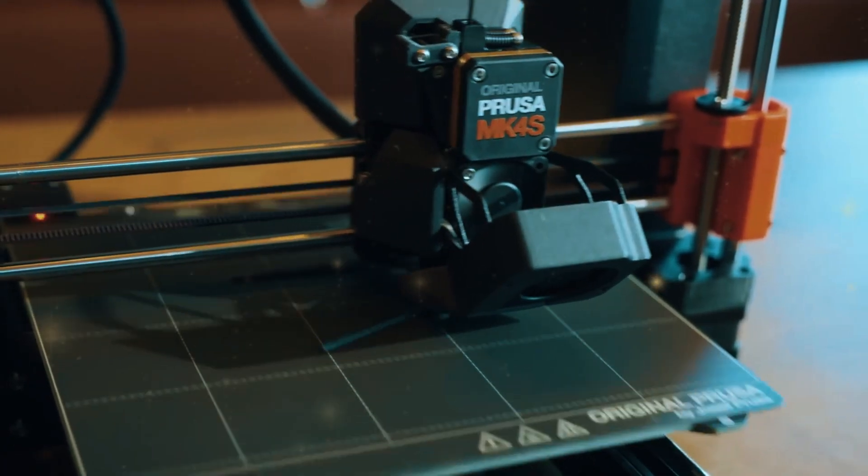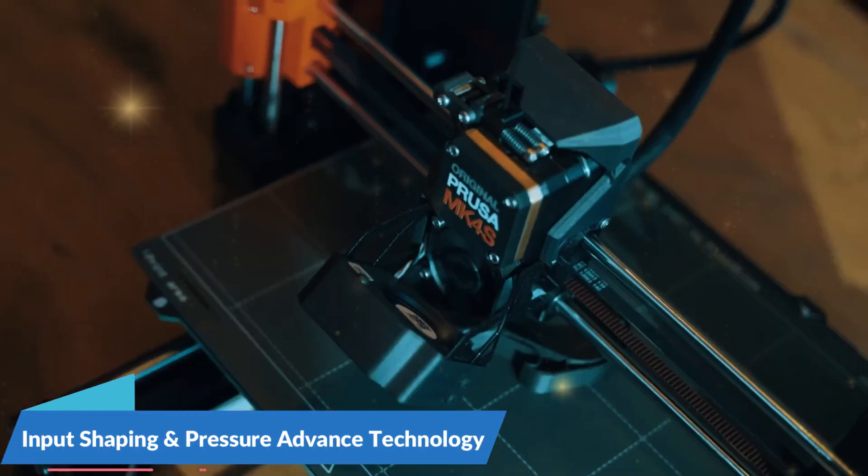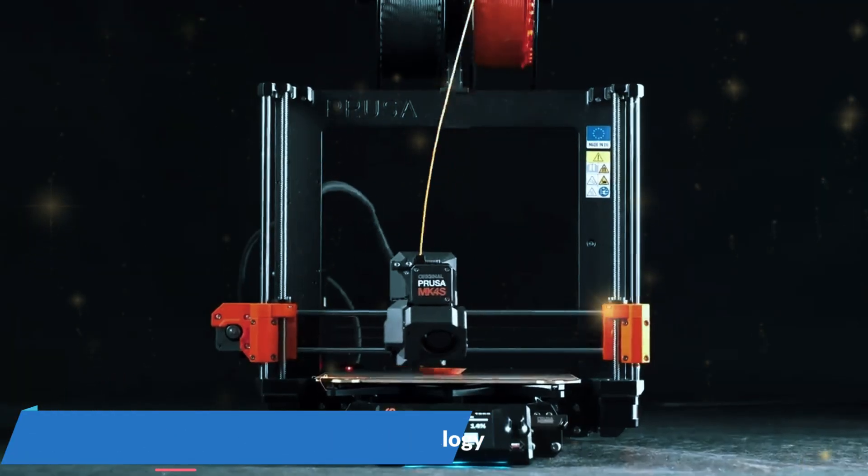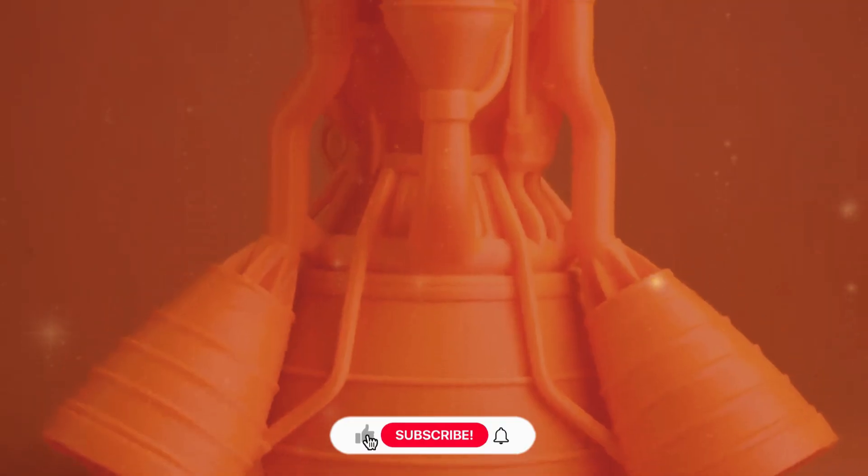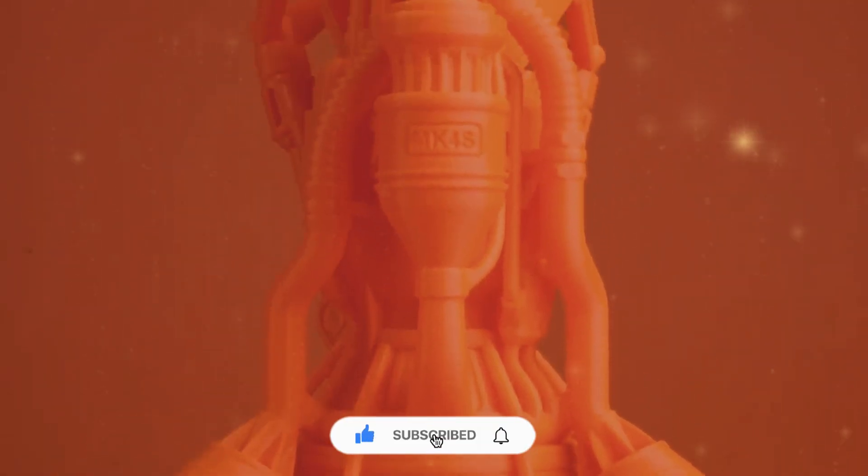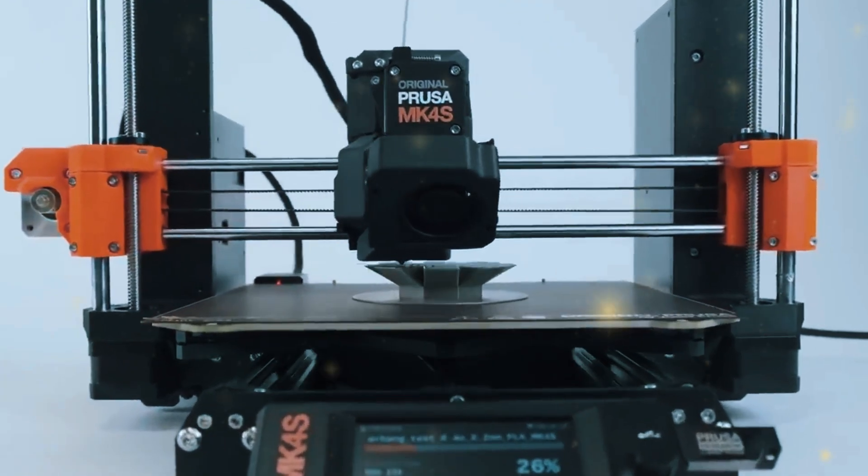One of the biggest advantages of the MK4S is its impressive speed. With input shaping and pressure-advanced technology, this printer reduces vibrations and ensures smooth filament flow, allowing for faster print speeds without compromising on quality. It's capable of printing up to twice as fast as its predecessor, the MK3S Plus, all while delivering sharp, detailed prints.